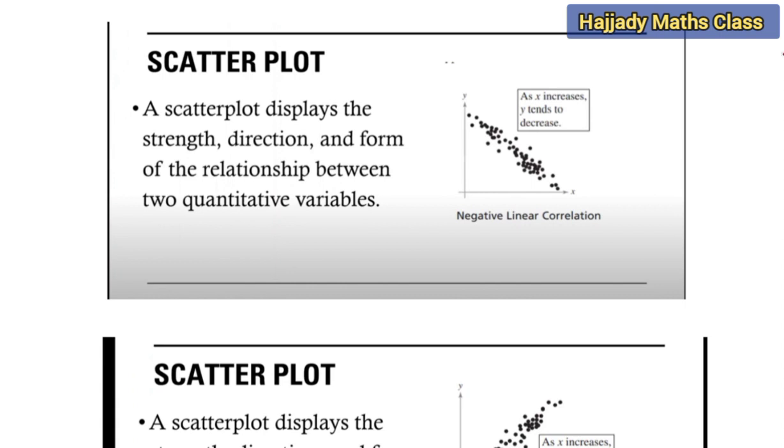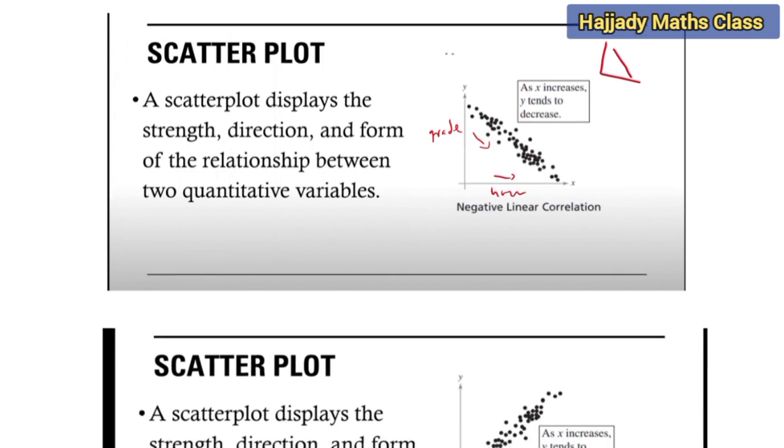Now looking at this, we can see that this is a negative linear correlation. A form of negative linear correlation shows a decline. It shows us as x increases, y decreases. That means there's a negative correlation, and that means as the student increases the number of hours spent reading, the grade reduces. So that's one of the applications of negative correlation.